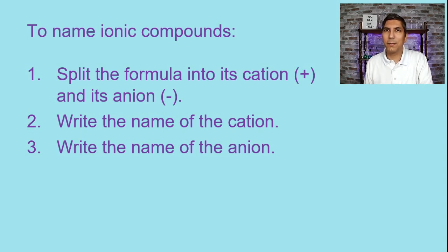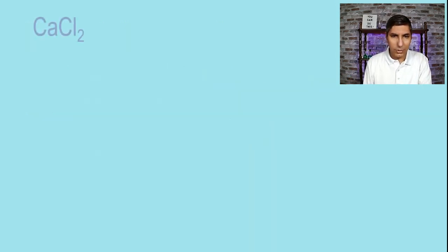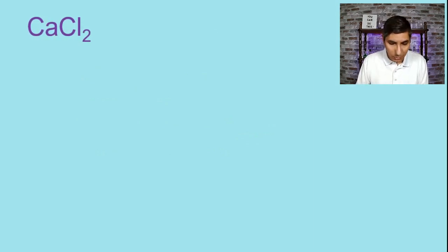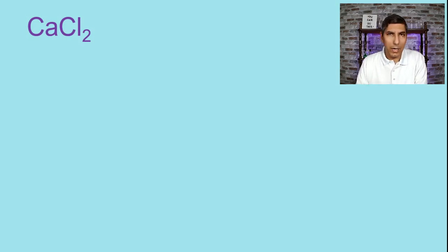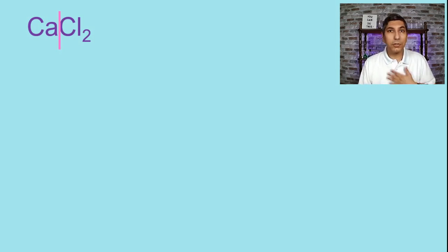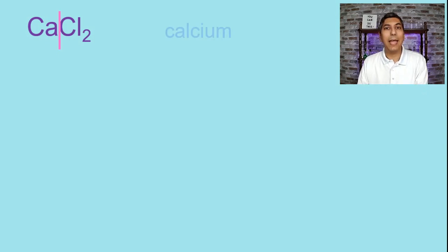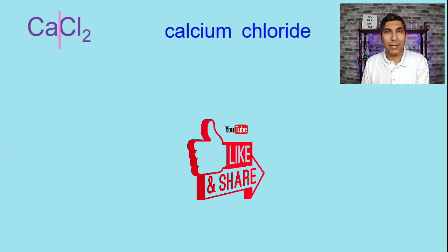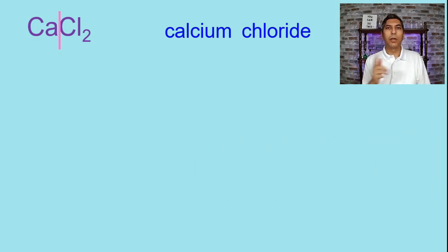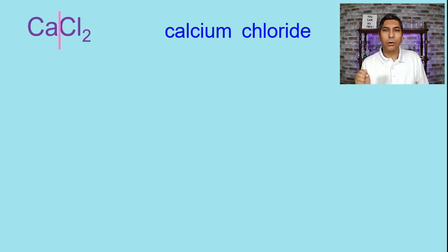We'll do several examples together. Starting with CaCl2 — I'm going to split this in half. Most of the time it's pretty obvious where ionic compounds need to be split, usually right down the middle. If there's ever any doubt, split it right after the first metal. Ca is named calcium, and the Cl ion is chloride. So the name of this compound is calcium chloride. We don't need any prefix — it's just calcium chloride.